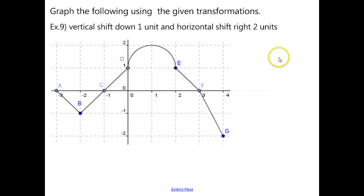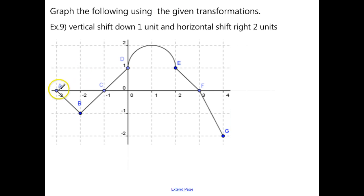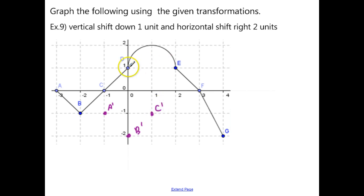Here we want to graph the following using the given transformations. This is a graph where you just see a shape and you have to apply a vertical shift down 1 unit and a horizontal shift right 2 units. Take each major point and move it: down 1 and to the right 2. So we mark a prime, b prime, c prime, d prime, and e prime — each shifted down 1 and to the right 2.